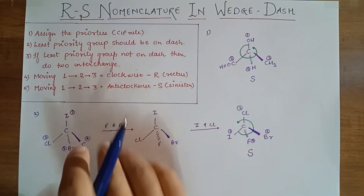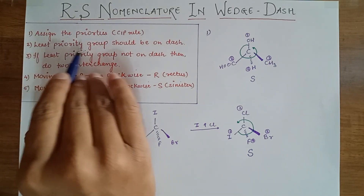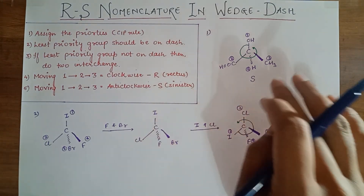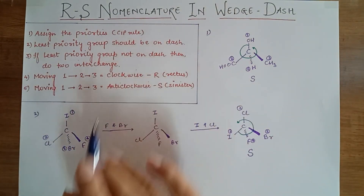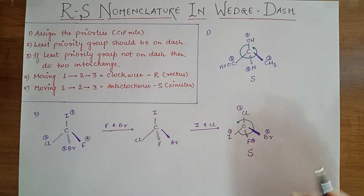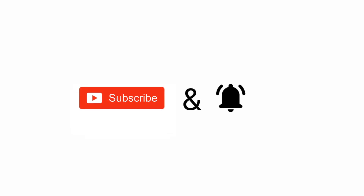To summarize: first assign priorities using the CIP rule. Second, check whether the least priority group is on the dash or on the wedge. If it is on the dash, there is no problem — assign the configuration directly. If the least priority group is not on the dash, perform two interchanges to get the final answer. Hope you understood. Please write any doubts in the comment section, subscribe, and press the bell icon for latest updates. Thank you.